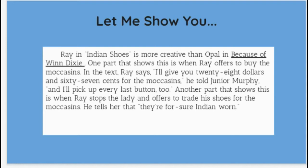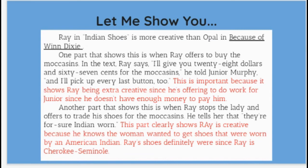I answered a question and I gave some proof, but I didn't explain why my proof mattered. So let's take a look at the redraft. Ray in 'Indian Shoes' is more creative than Opal in 'Because of Winn-Dixie.' One part that shows this is when Ray offers to buy the moccasins. In the text, Ray says, 'I'll give you 28.67 for the moccasins,' and 'I'll pick up every last button too.' Now I'm adding a sentence or two explaining why this supports my claim — 'This is important because it shows Ray being extra creative, since he's offering to do work for Junior since he doesn't have enough money to pay him.'